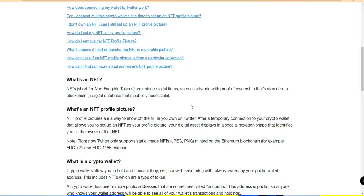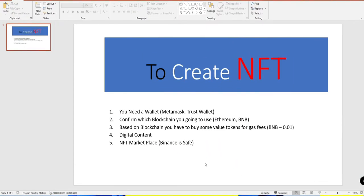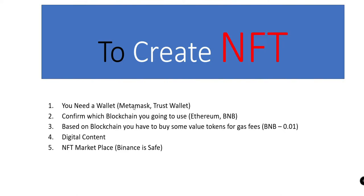To create an NFT, first you need a wallet - either a MetaMask wallet or Trust Wallet. I prefer MetaMask because it supports multiple blockchains like BNB, Ethereum, Phantom, and Polygon. Next, decide which blockchain you're going to use. Currently there are two main options: Ethereum and Binance Smart Chain. For Ethereum you need ETH; for Binance Smart Chain you need BNB. I'm going with BNB because Ethereum gas fees are very high, whereas BNB costs and gas fees are much lower.